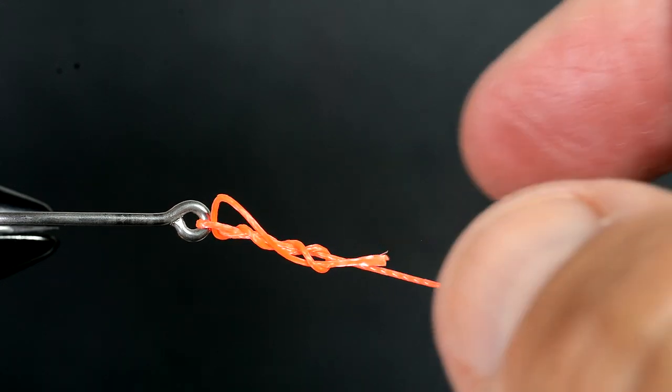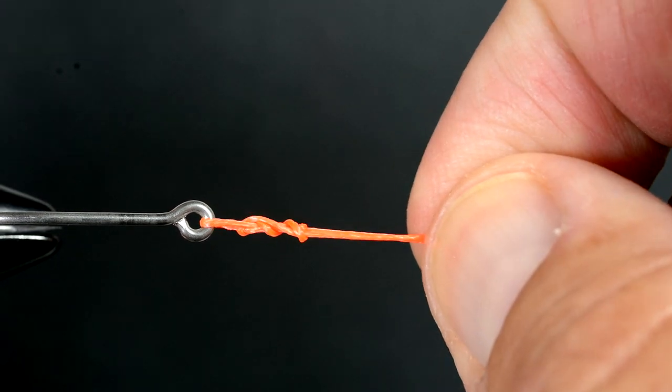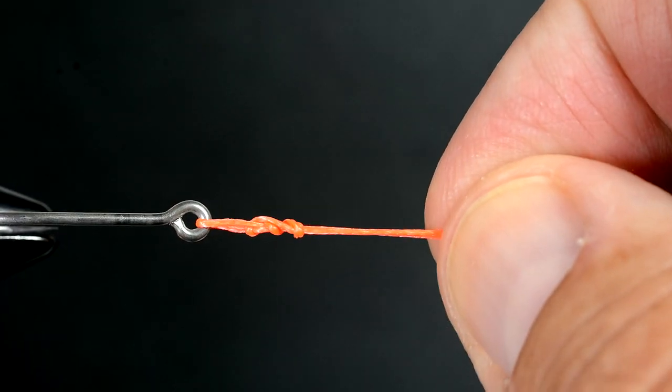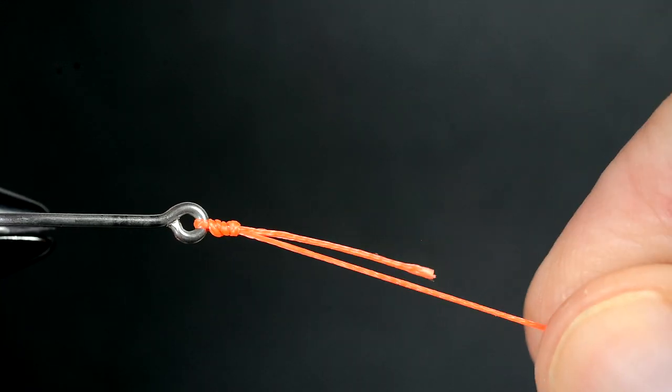Wet the knot and pull on the tag end to tighten down the coil. Slide the knot tight against the eye of the hook.